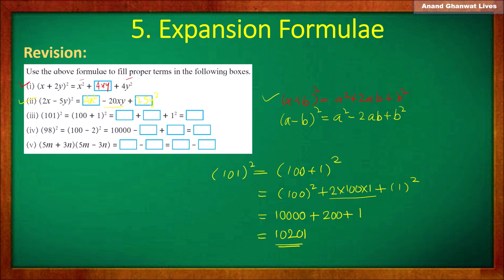Let us put that answer in the activity sheet: the first term is 10,000, the second term is 200, plus the square of 1, and the total is 10,201.